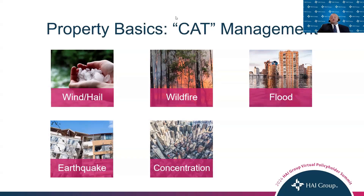Also, buildings that are very close to each other are susceptible to greater losses. If there's a fire or wind event to one building, it will most likely spread to the adjacent buildings. Underwriters can control these exposures by applying a sub-limit for certain types of losses or applying higher deductibles to pass some of the risk on to the member or policyholder.